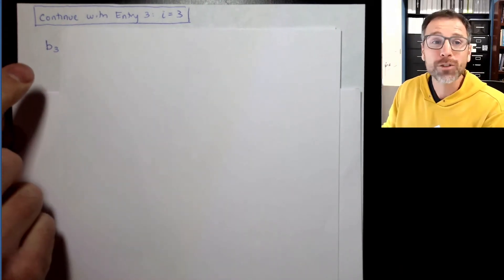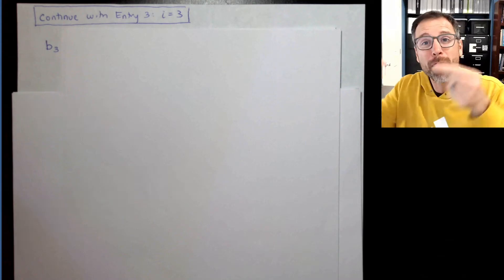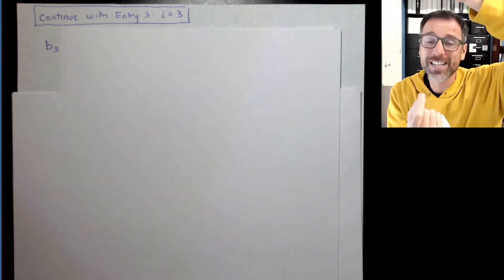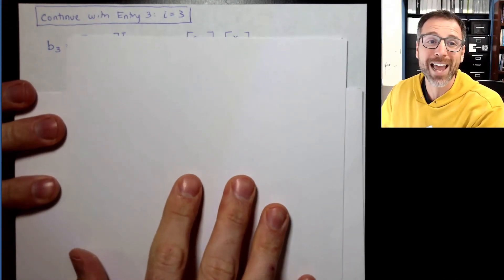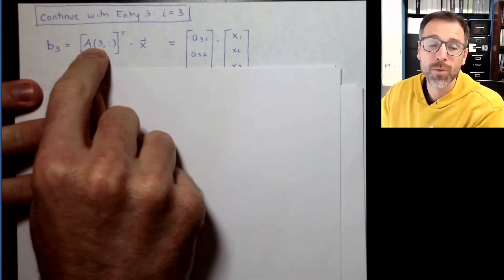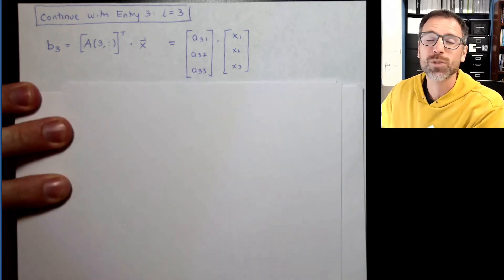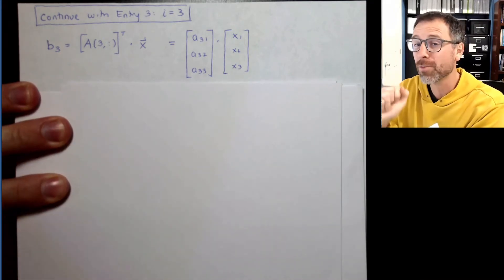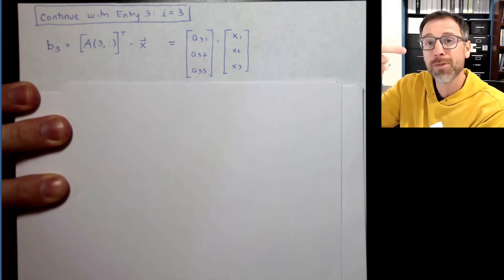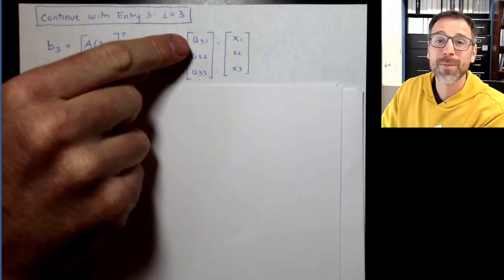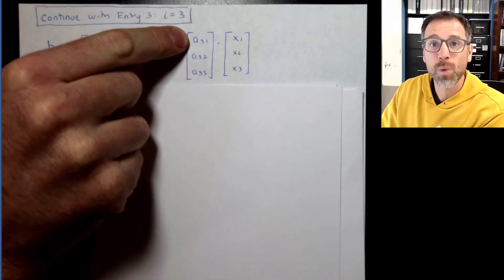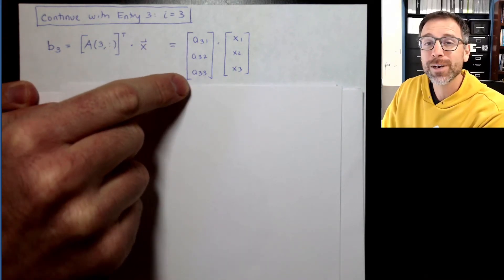The third entry of my matrix vector product is going to be the third row of my matrix treated as a column vector using transpose dotted with the input vector X. So in this case, I'm thinking about the third row of A transpose dotted with X. We knew that A was 4 by 3, which means the third row is 1 by 3. When I take the transpose, it's 3 by 1. Let's think about that third row: A_31, A_32, A_33.